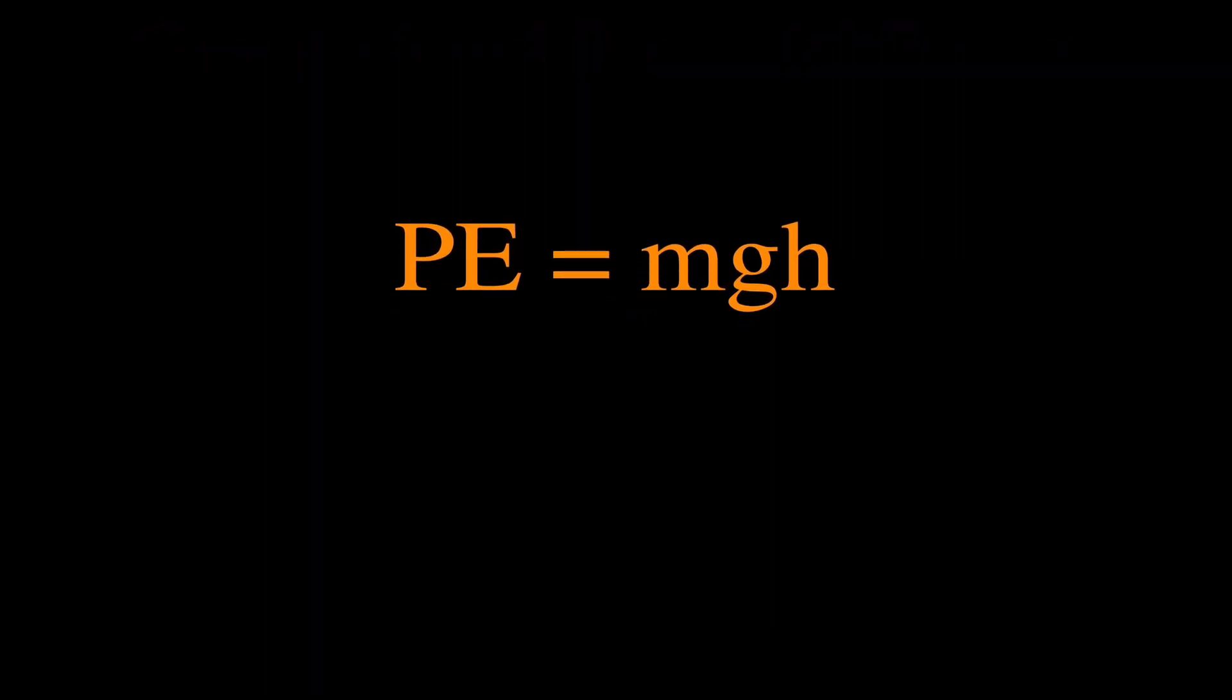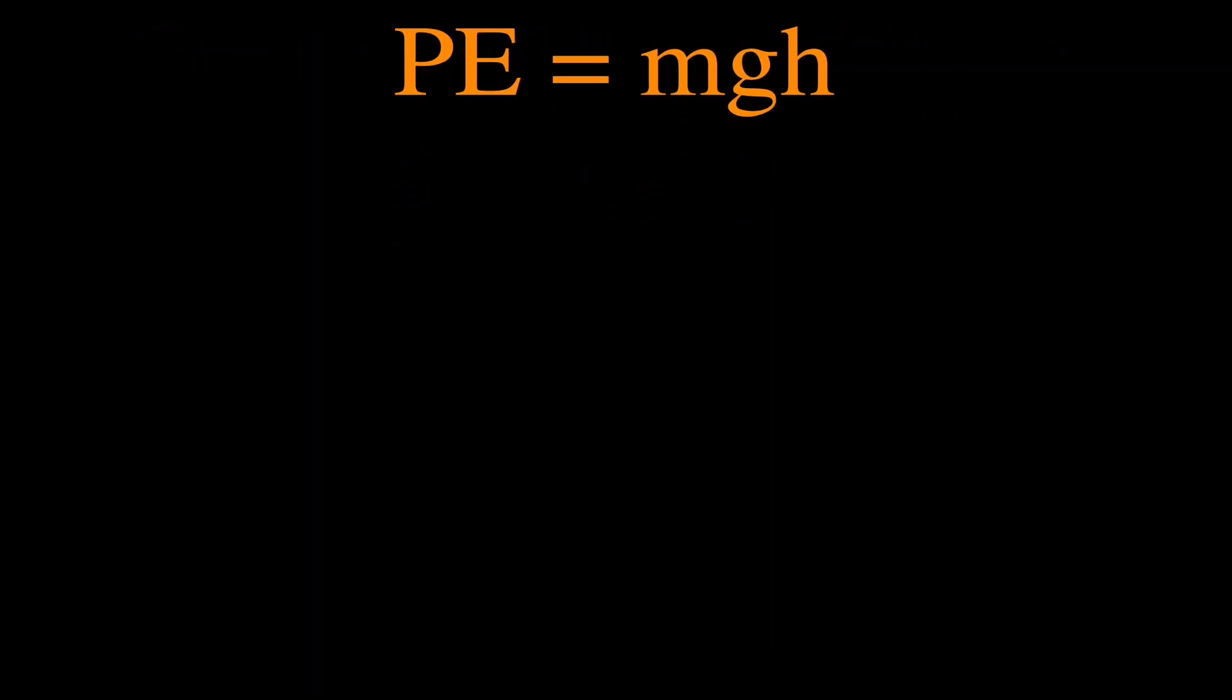Now we have this equation for potential energy, and you can just plug the values in, m times g times h. That's pretty straightforward. But you should also be able to solve for m, and solve for h if you're given the other values. If you're given three of the four values, you should be able to solve for the fourth. For solving for mass and h, we're going to use this triangle, which I like to call the magic math triangle. You see this used a lot with density and with Ohm's law V = IR, but you can also use it for potential energy.